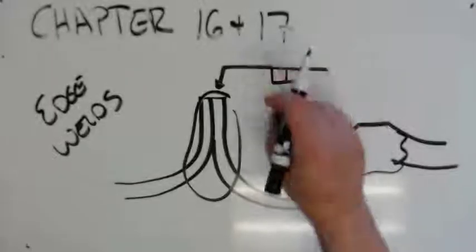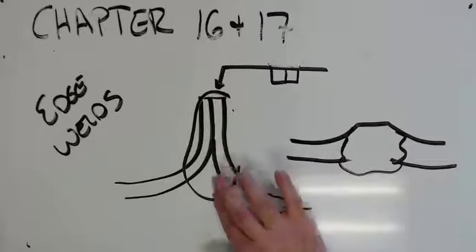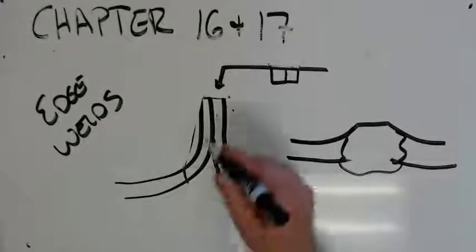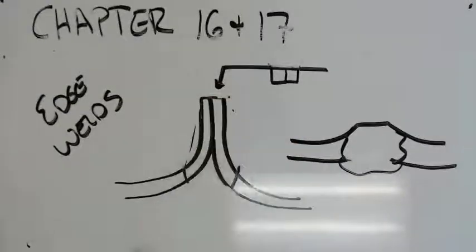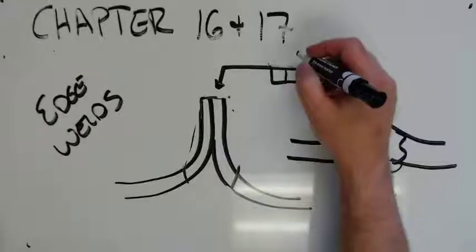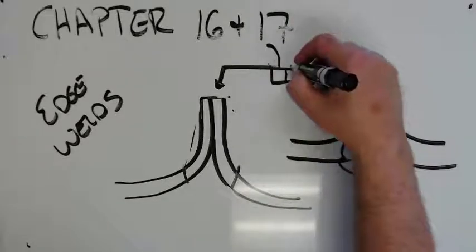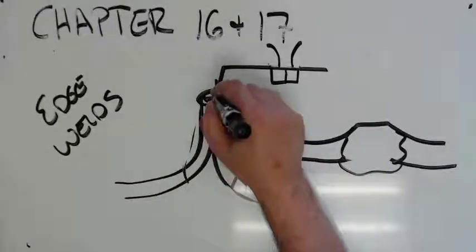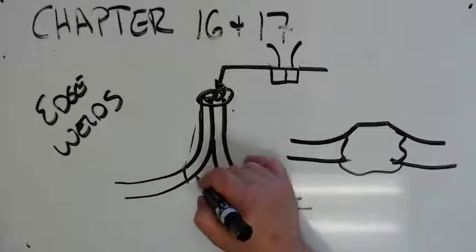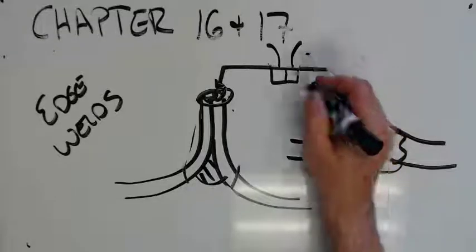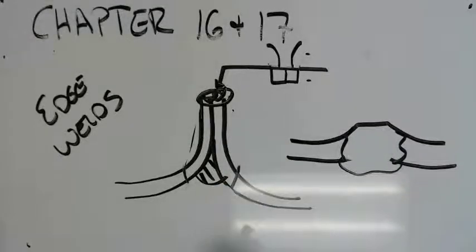We can also, on a joint like this, weld the other side. This is a flare groove weld or a V-groove weld. So on the other side, that's flare groove weld. What that means is I'm going to weld this, but I'm also going to weld this, because arrow side, other side. That's done because it really stiffens up the joint, you don't have any flex back here.